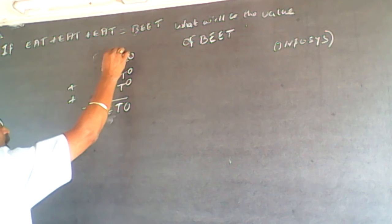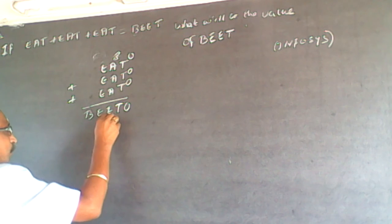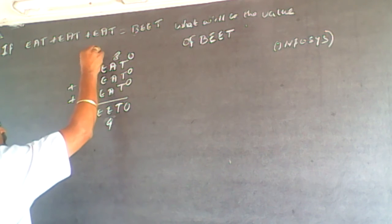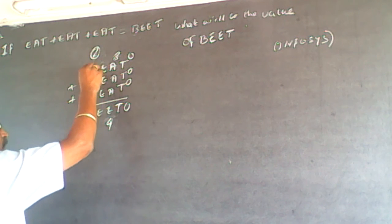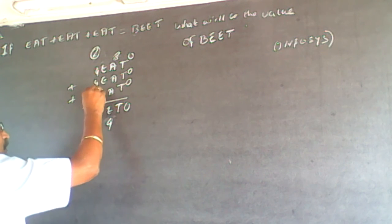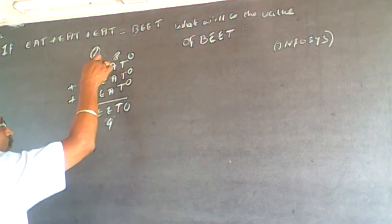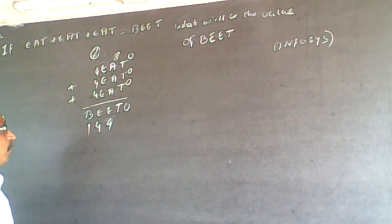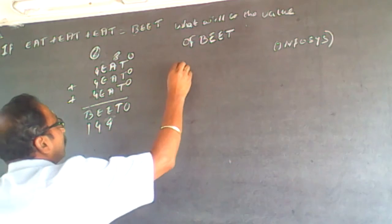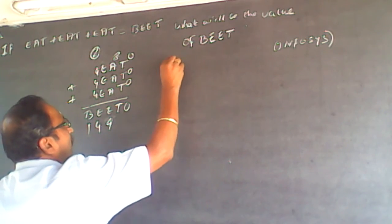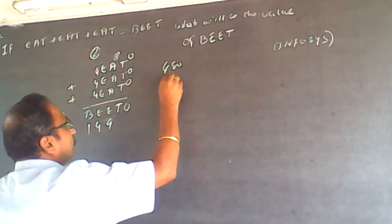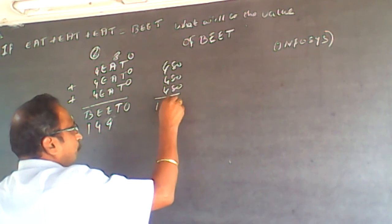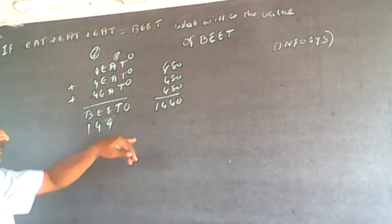Then I check A=8. If A is 8, 3×8=24, so I get 4 with 2 carried over. If E is 4, then 3×4 plus carry 2 equals 14, so 4 with 1 carried over. This gives the number 480, and 480 plus 480 plus 480 equals 1440. So this is a valid solution.